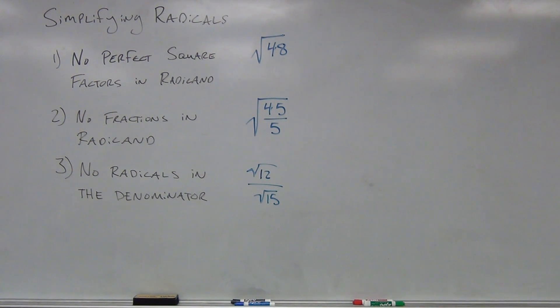All right, since you all deserve it, I have three more examples that can help you with simplifying radicals. We have the square root of 48. We will find our perfect square factors in that radicand and factor them out.